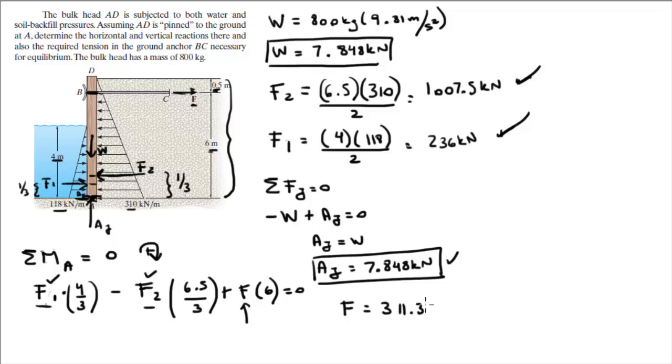And that's what you should get. And the last one is easy: sum of the forces in the X is equal to 0. So in the X, we have AX going to the right plus F1 going to the right minus F2 going to the left plus F going to the right, and that is equal to zero.